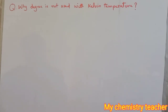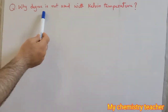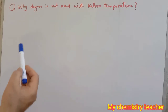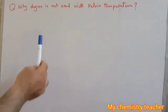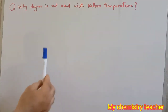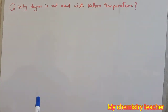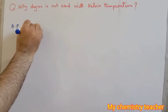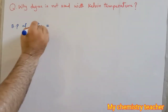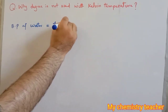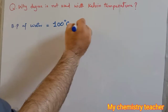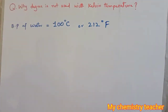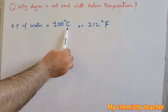Assalamu alaikum dear students. In today's video we are going to answer the question: why is degree not used with Kelvin temperature? Whenever we represent temperature in Fahrenheit or Celsius scale we use degree, but when we want to express temperature in Kelvin scale we do not use degree. For example, the boiling point of water is 100 degree Celsius or 212 degree Fahrenheit.